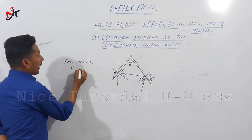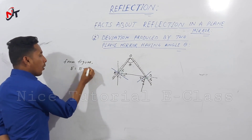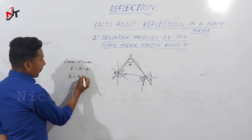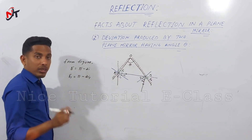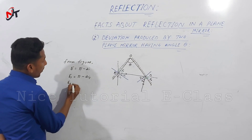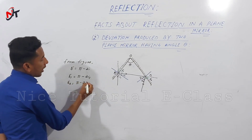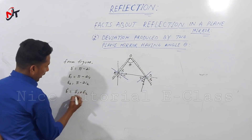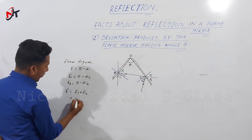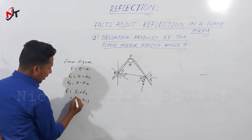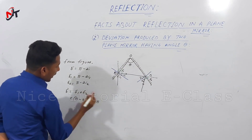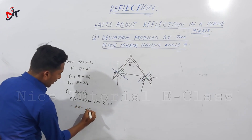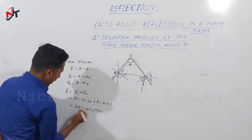From the figure, delta equals pi minus 2i. Similarly, delta 1 equals pi minus 2i1 and delta 2 equals pi minus 2i2. The total deviation delta 1 plus delta 2 equals 2pi minus 2(i1 plus i2).